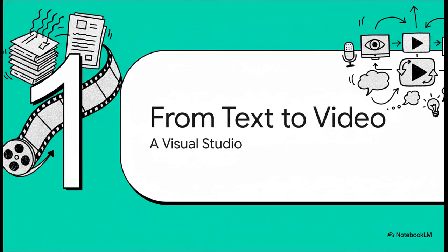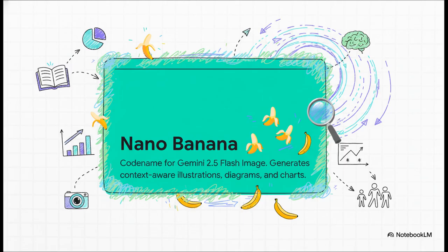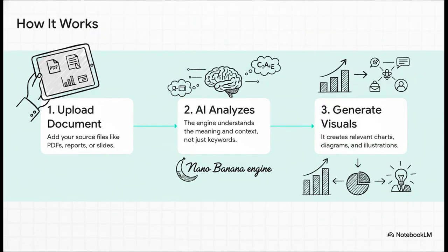Notebook LM takes your most complicated documents and spins them into videos that are actually designed to teach and explain, kind of like a human expert would. The magic is powered by a brand new engine called Nano Banana — a super specialized image model from Google. The key part is that it's context-aware. The AI isn't just randomly pulling stock photos from the internet; it's actually reading your document, understanding the ideas, and generating visuals that truly explain what's going on. You upload a business report and it creates charts to visualize your data. You upload a complicated scientific paper and it spits out diagrams to explain the tricky concepts. It's AI that finally gets the context.